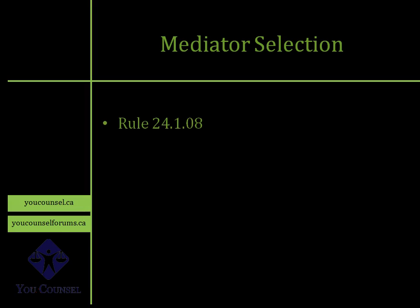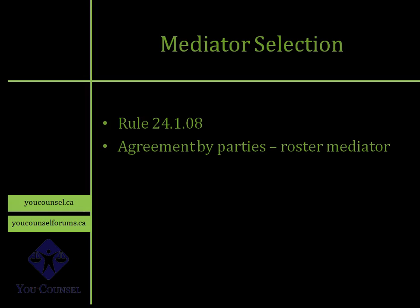How do you select a mediator? You can refer to Rule 24.08, which talks about mediator selection. First, parties have to agree to a mediator. They can agree to a roster mediator — a list of mediators held by the Mediation Coordinator at the court. That list is available online, and all parties need to agree that a particular person will mediate. That's one way of selecting a mediator.